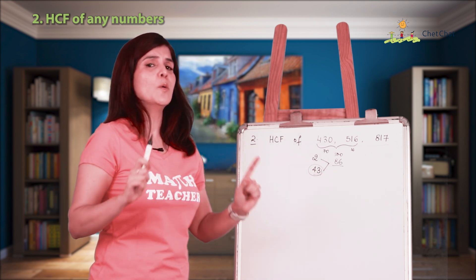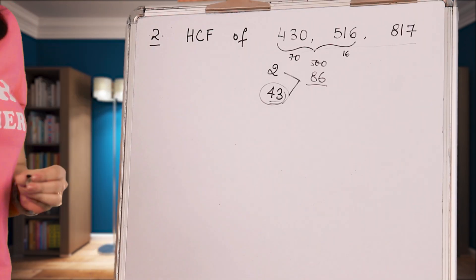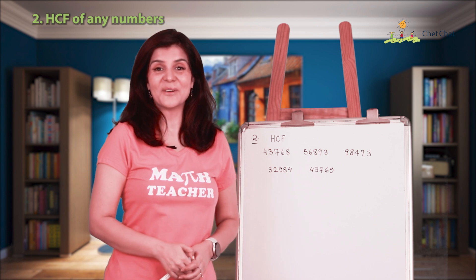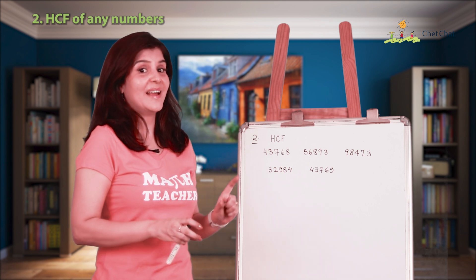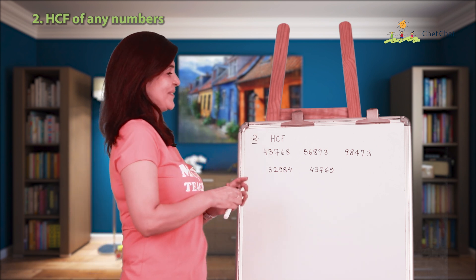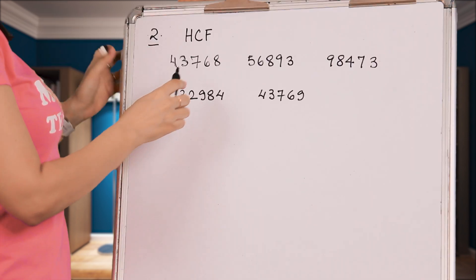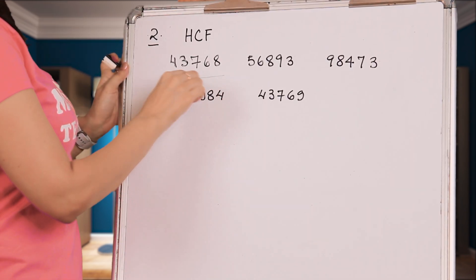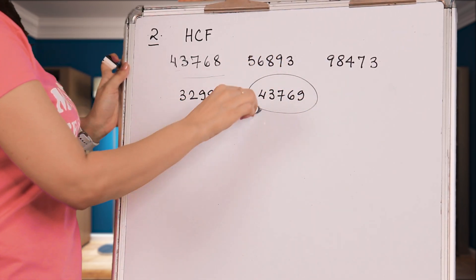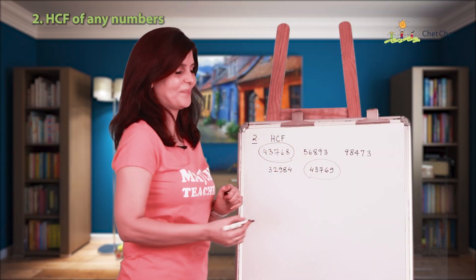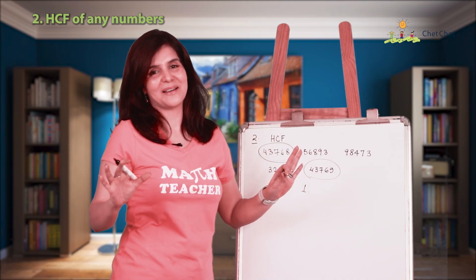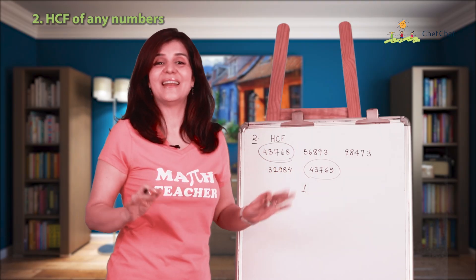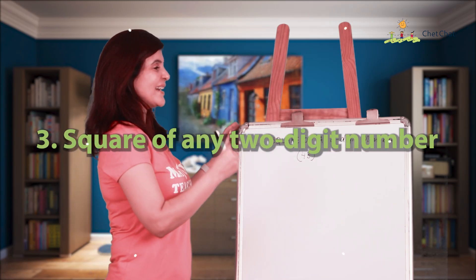Now let's try five monstrously large numbers. Find the two nearest numbers: 437,68 and 437,69 — the difference between them is just 1. And the HCF of these numbers is 1 and cannot be any more than that. Easy! Okay, trick number three is to find the square of a two-digit number.